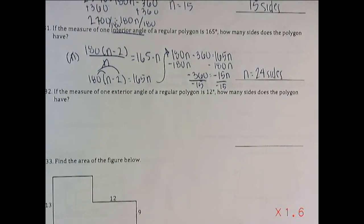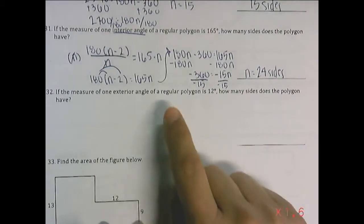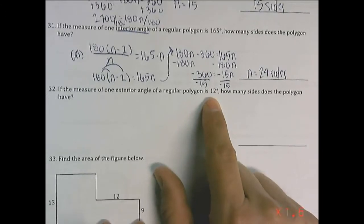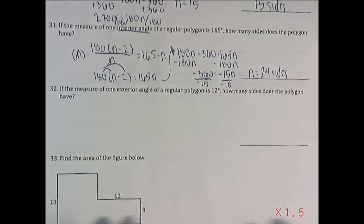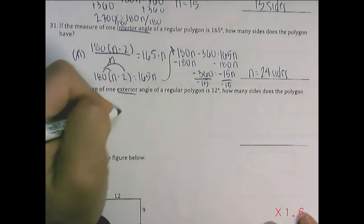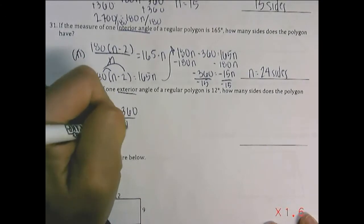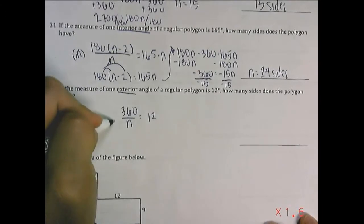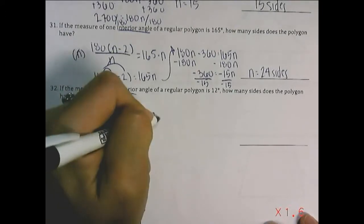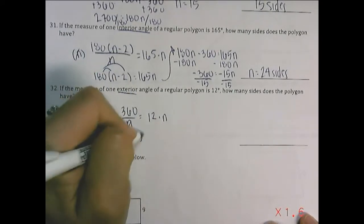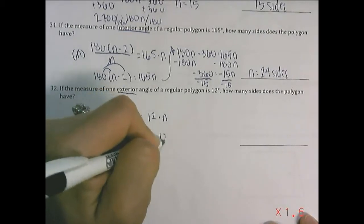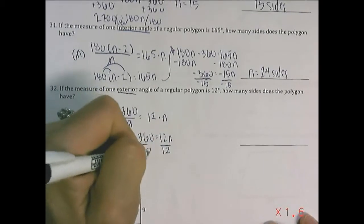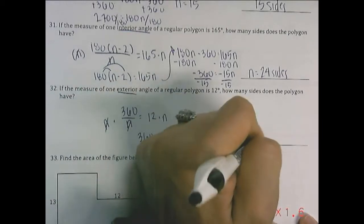If the measure of one exterior angle of a regular polygon is 12 degrees, how many sides does it have? Remember, exterior angles equal 360 divided by the number of sides, and here it equals 12. Multiply both sides by n to get 360 equals 12n, then divide by 12 and you get 30 sides.